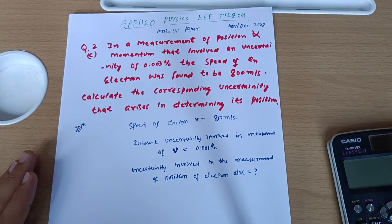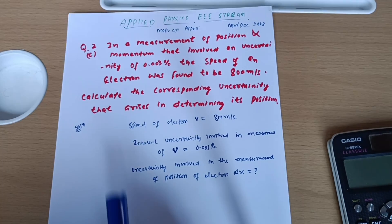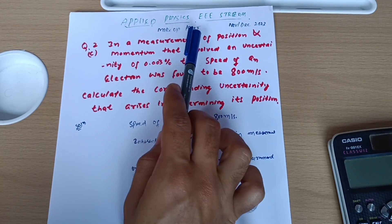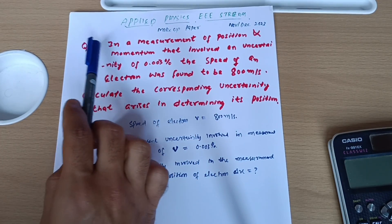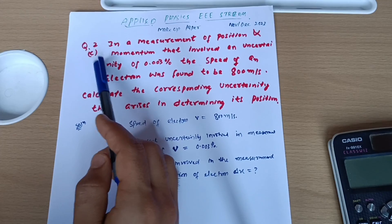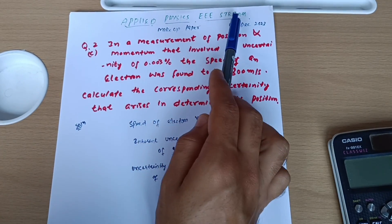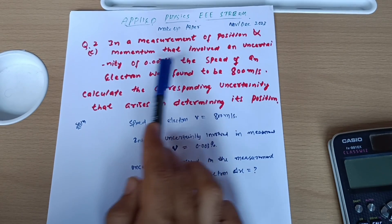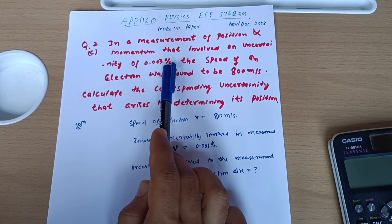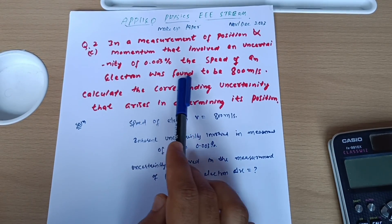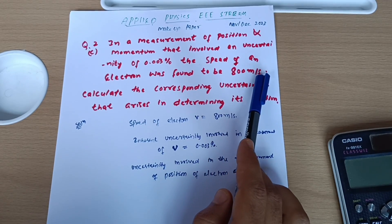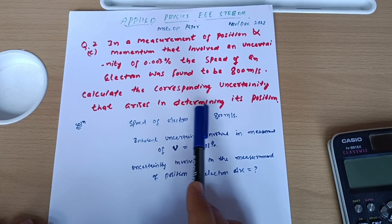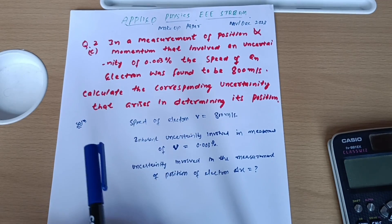Dear students, welcome back to another lecture. In the previous lecture we discussed question number 1C from the makeup paper. Today I will discuss question number 2C, the second part of applied physics tripling stream. The question is: in a measurement of position and momentum that involved an uncertainty of 0.003 percent, the speed of an electron was found to be 800 meters per second. Calculate the corresponding uncertainty that arises in determining its position.